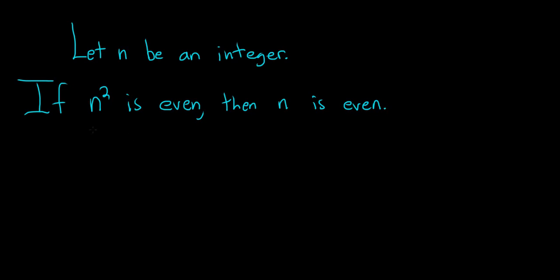So this is an if p then q type statement. This is our p and this is our q. A direct proof would involve assuming that p is true and then showing that q is true. A proof by contrapositive would work as follows: we assume not q is true and then we show not p is true.